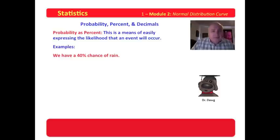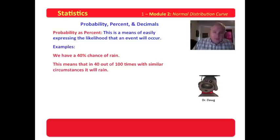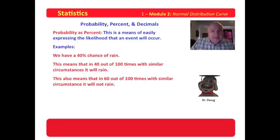That means that forty times out of 100, we're going to have rain under these same circumstances. It means forty out of 100 times, with similar circumstances, it will rain. This also means that in sixty out of 100 times, with similar circumstances, it will not rain. Where did I get that? Well, I knew that the total chance of rain was 100%, and 40% says it's going to rain. That means 100 minus 40 tells us the likelihood that it's not going to rain. So there's a 60% chance that it will not rain when we have a 40% chance that it will rain. The chance it will rain and it will not rain add up to 100.